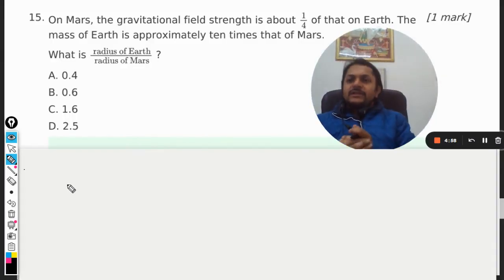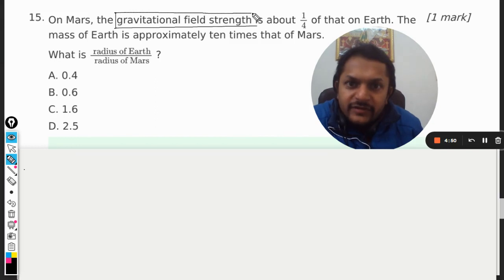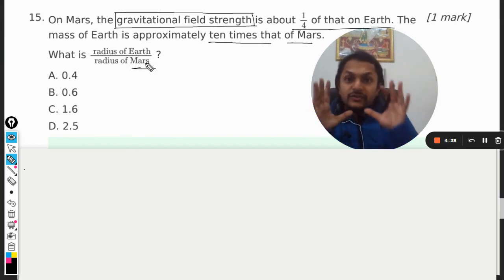Okay students, let us see what is there in this question. On Mars, the gravitational field strength is about one fourth of that on Earth. The mass of Earth is approximately 10 times that of Mars. So what is the radius of Earth divided by radius of Mars?